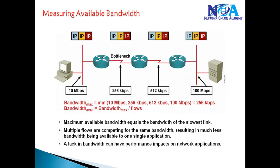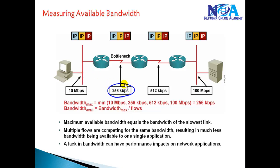In these scenarios we don't have enough bandwidth. The bottleneck link supports only 256 Kbps, and you cannot send information faster than that because the link connecting Router 1 and Router 2 is limited to 256 Kbps.